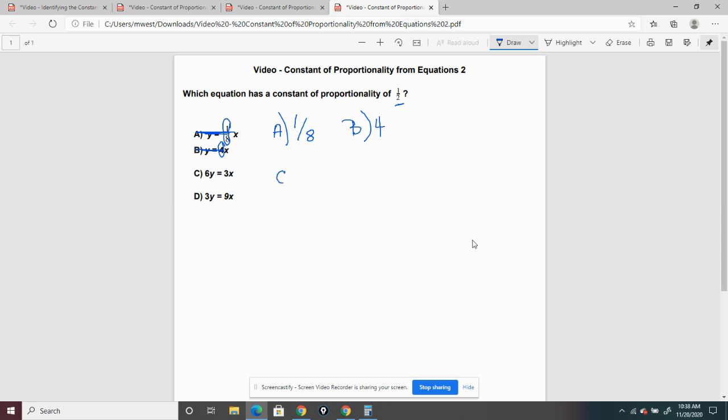Now, C is a little bit different, because we have that equation there. And 6y equals 3x, all right? And we know that our equation for a constant of proportionality is y equals kx.